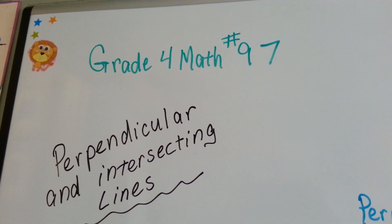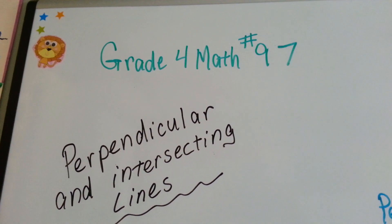Grade 4 math number 97, Perpendicular and Intersecting Lines.